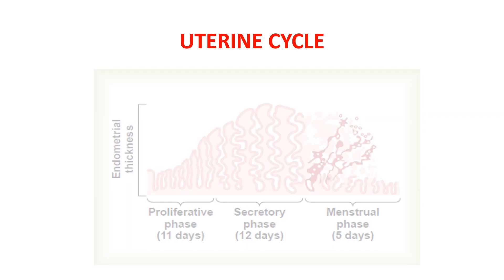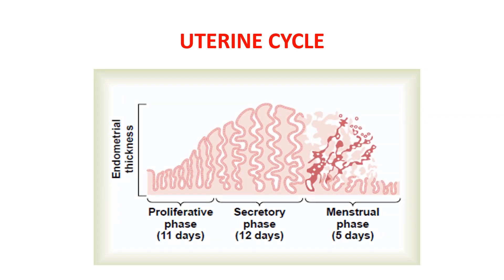Another event of the menstrual cycle is the uterine cycle. The uterine events of the menstrual cycle can be divided into proliferative, secretory and menstrual phases. After menstruation, only a thin layer of endometrial stroma remains. Then the endometrial layer grows in thickness, and till the time of ovulation it is 3 to 5 mm thick. At the peak of the secretory phase, endometrium has a thickness of 5 to 6 mm. The secretory phase lasts for about 12 days and then it is followed by menstruation, where there is a breakdown of the endometrial layer along with the blood vessels.